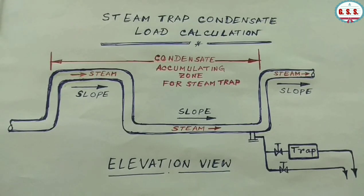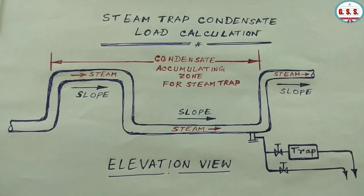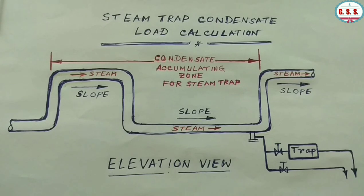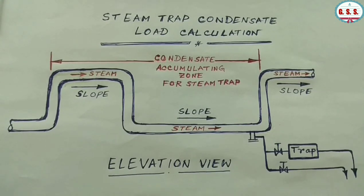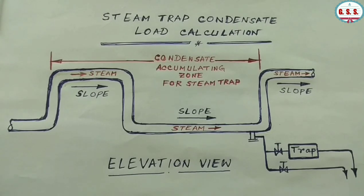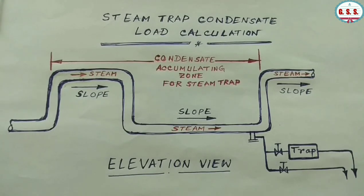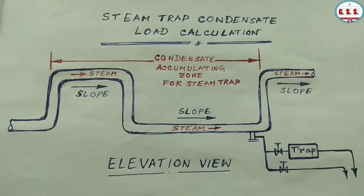This piping configuration shows the steam line in vertical and horizontal planes. If the entire steam line is in the horizontal plane with horizontal loops, then traps should be provided at about 100 to 120 meters apart and the condensate load is to be calculated for that length of steam line.